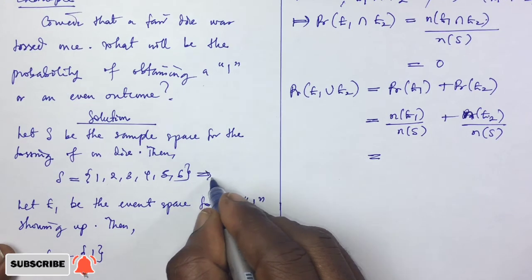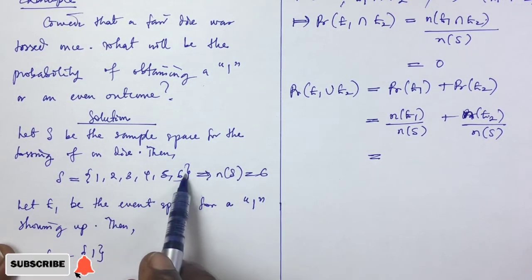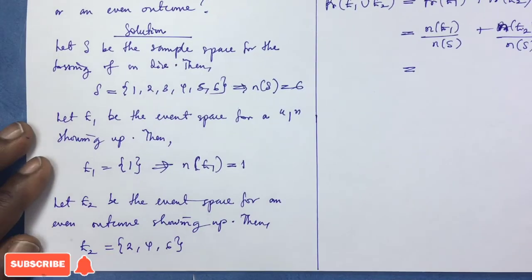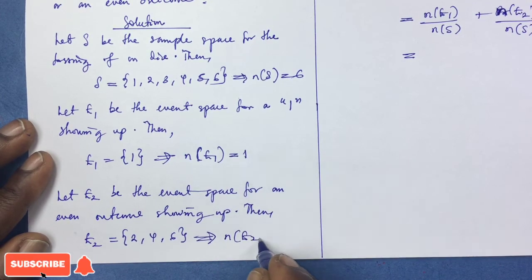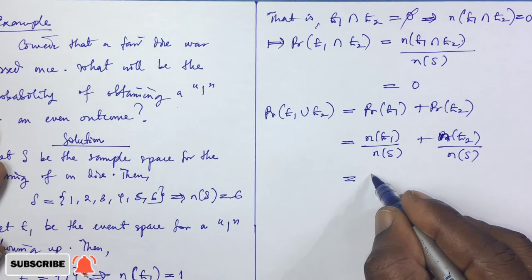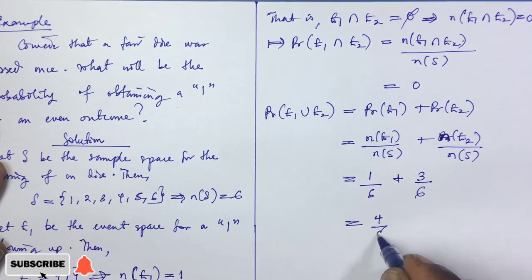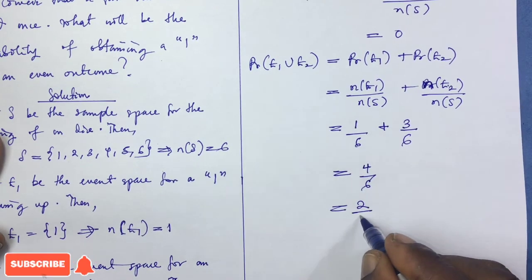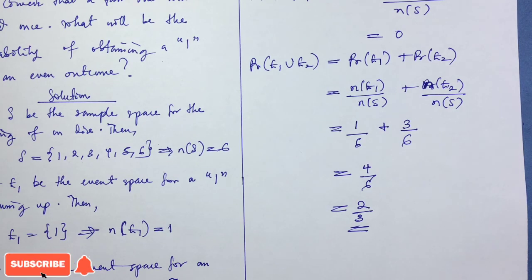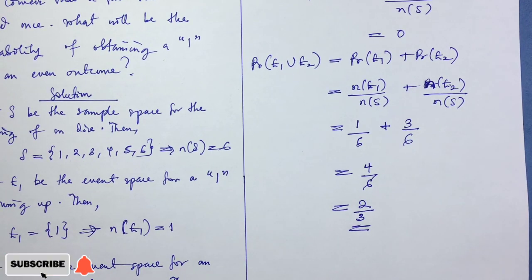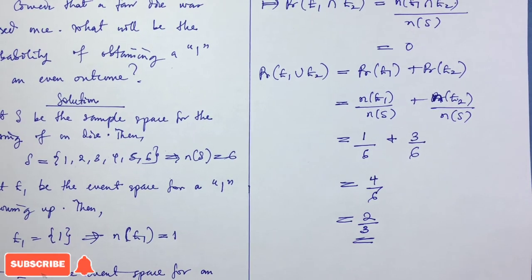Here n(S) = 6, n(E1) = 1, and n(E2) = 3. So P(E1) + P(E2) = 1/6 + 3/6 = 4/6, which simplifies to 2/3. Therefore, the probability of obtaining a one or an even outcome when tossing one fair die is 2/3. This is a practical example of mutually exclusive events. Thank you very much for watching — see you in the next class on probability.